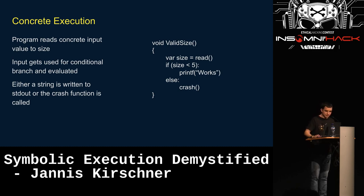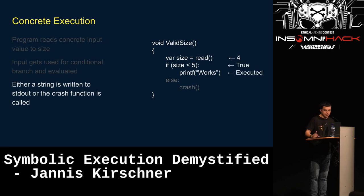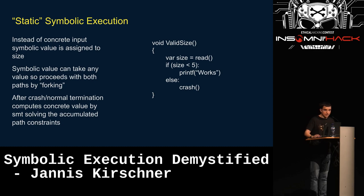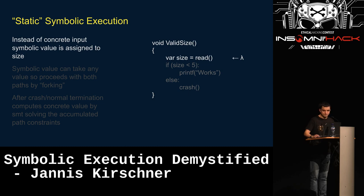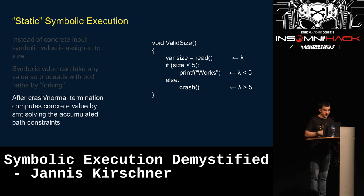Let's look at concrete execution first — this is what you do with a normal program run. You enter a value, it gets evaluated, and based on that it either prints 'it works' or executes a crash path. With symbolic execution, you're not providing a concrete value but a symbolic one. You provide a symbolic value to your input, and it evaluates both parts of the branch, keeping track of both states and the accumulated constraint — in this case, that your input has to be smaller than five.